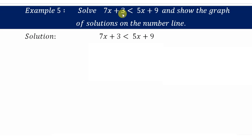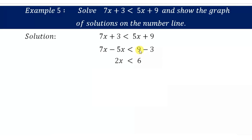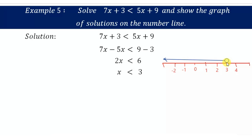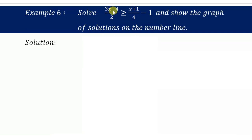Example 5: Solve 7x plus 3 is less than 5x plus 9 and show the graph on the number line. Moving variable terms to the left and constants to the right: 7x minus 5x is 2x, less than 9 minus 3 equals 6, so x is less than 3. On the number line, we place a hollow circle at 3 and the arrow extends to negative infinity.